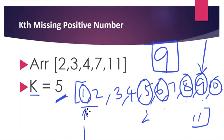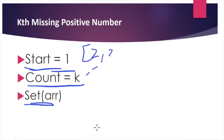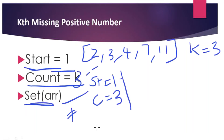For example, consider the array two, three, four, seven, eleven and k equals three. So count is initialized to three. In the first iteration, start is equal to one and count is equal to three. It checks whether one is present in the set — it is not present, so we increment start to two and decrement count to two, because it encountered a missing number.